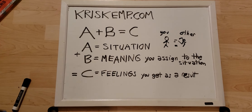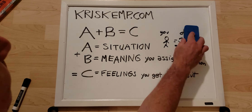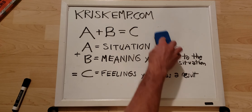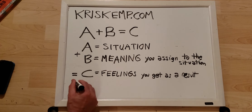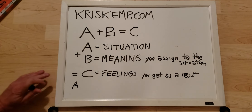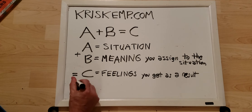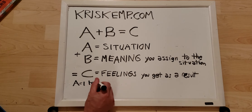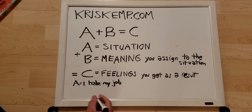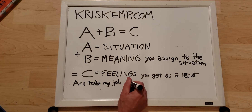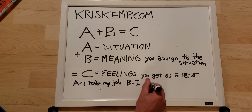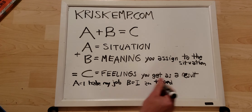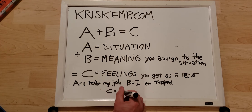So this is just an overview of the ABC method. Think of a situation you're in and ask yourself: what type of meaning am I giving to it? Because the only thing you can really control is the meaning you're giving to it. Let's say the situation is: I hate my job. And the meaning assigned to it is: I am trapped. Then the feelings you get as a result are: trapped, stuck, I can't do anything.